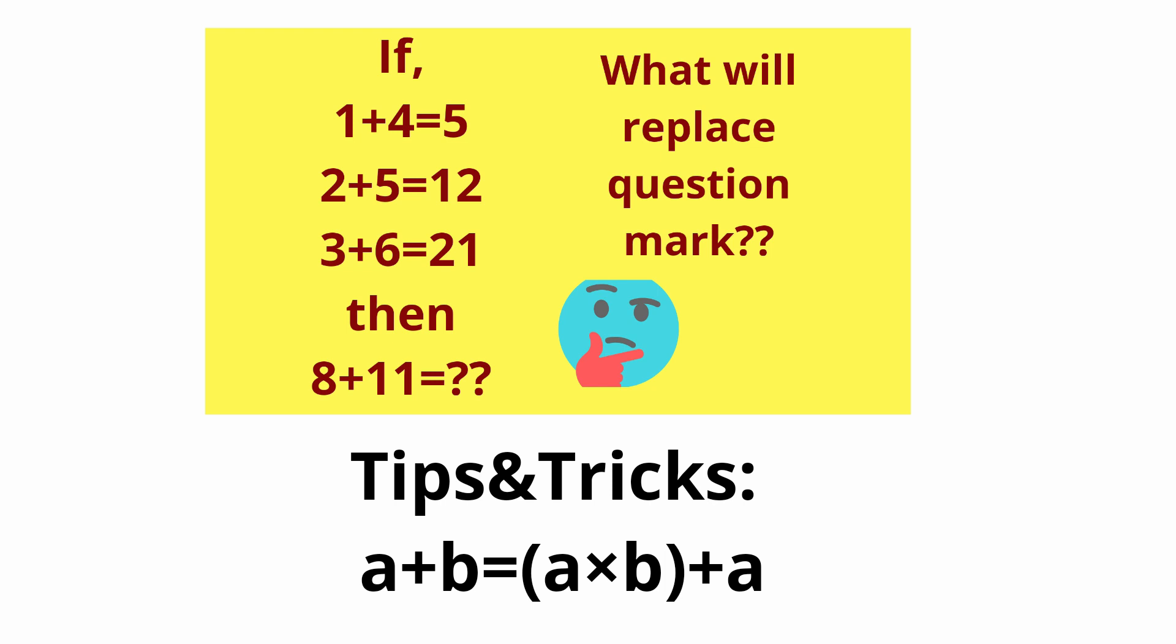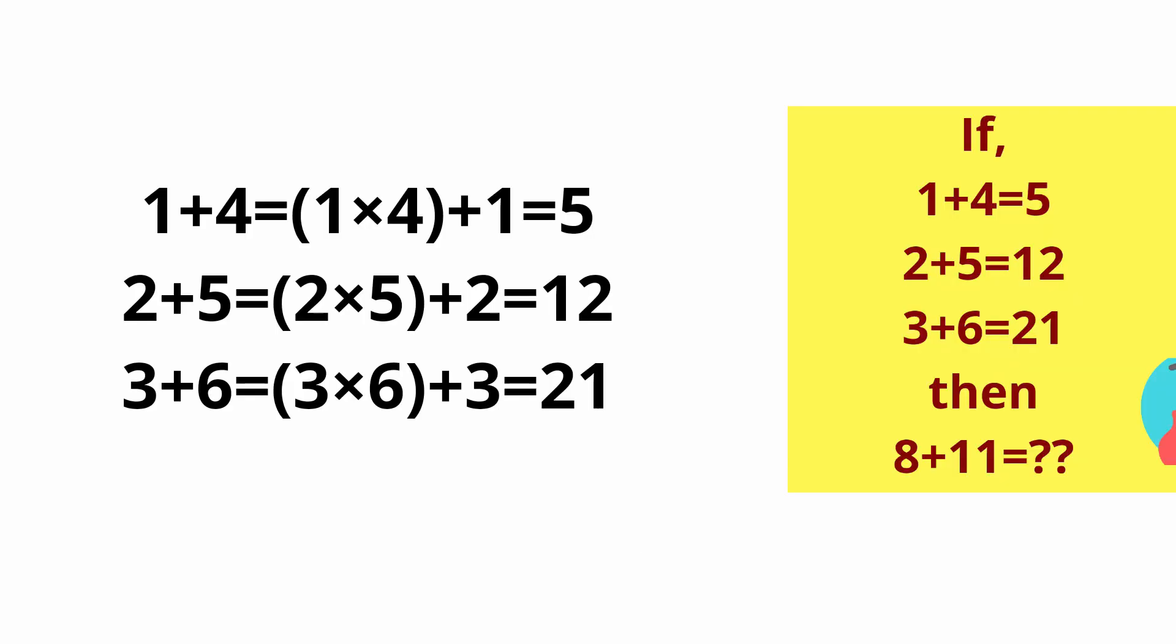Three rows, and let's see what is the answer. The first row is 1 plus 4 equals 5. So tips and tricks: 1 into 4 plus 1, we will get 5. 2 plus 5 equals 2 into 5 plus 2, we will get 12. 3 plus 6 means 3 into 6 plus 3, we will get 21.